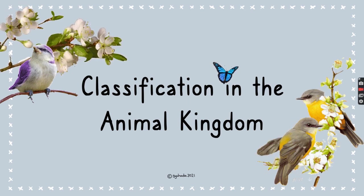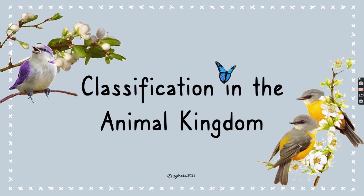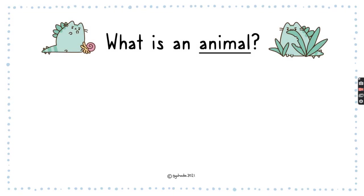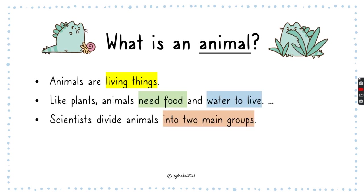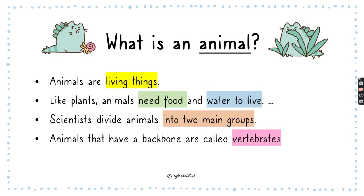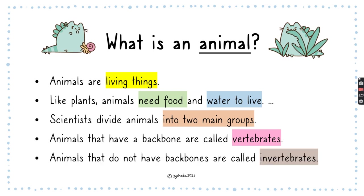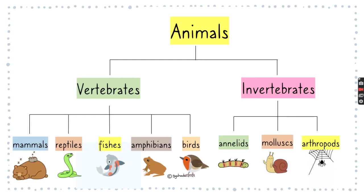Today we'll focus on the animal kingdom. Animals are living things — like plants, they need food and water to live. Scientists divide animals into two main groups: animals that have a backbone are called vertebrates, and animals that don't have backbones are called invertebrates.